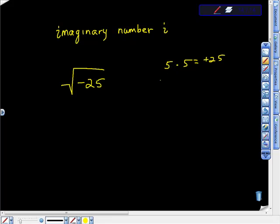And then really good students will say it must be negative 5 times negative 5. But again, negative times a negative is a positive. 5 times 5 is 25. It doesn't work, does it?